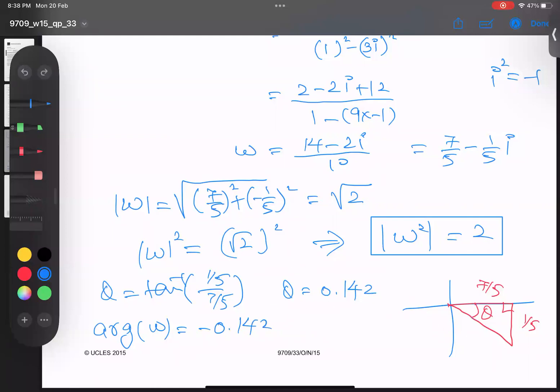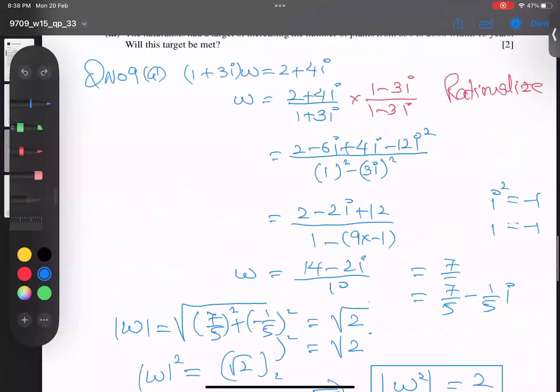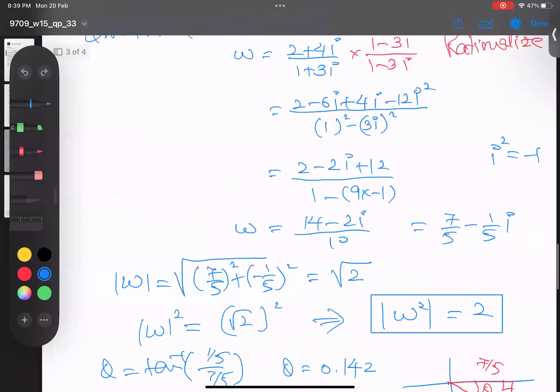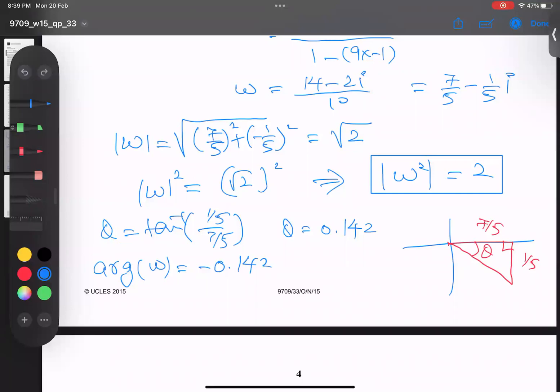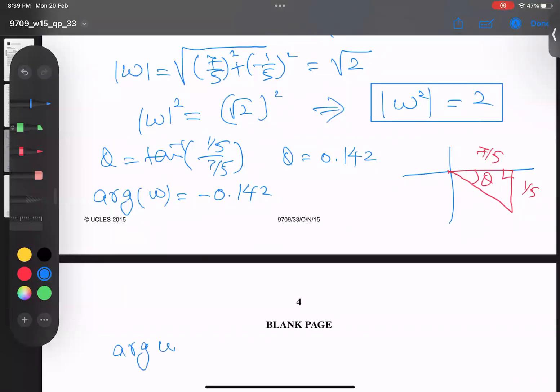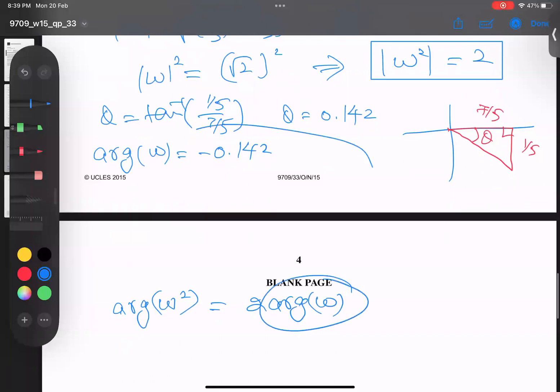What is the argument of w²? Like logarithm properties, if I have a square inside, it behaves like arg(w²) = 2·arg(w). So 2 times -0.142 gives -0.284 radians. Alhamdulillah.